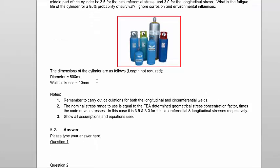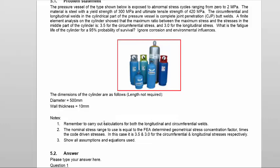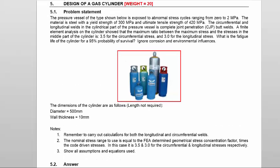A few hints are given at the bottom. Remember to carry out calculations for both the longitudinal and circumferential welds — that's always important. The nominal stress range to use is equal to the FEA-determined geometrical stress concentration factor times the code-driven stresses; in this case, 3.5 and 3.0. Show all your assumptions and equation derivations.